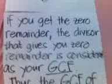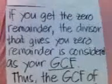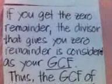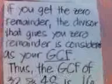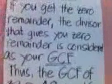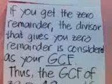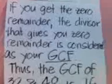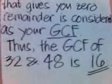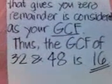Now, since we already get the 0 remainder, it tells us that the divisor that gives you a 0 remainder is considered as your GCF, or the greatest common factor. Therefore, the GCF of 32 and 48 is 16.